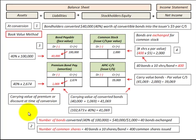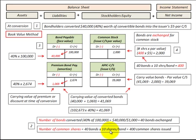The number of bonds converted would be $40,000 divided by $1,000 per bond, giving us 40 bonds exchanged. The number of common shares issued would be 40 bonds times 10 shares of common stock per bond, for a total of 400 common shares issued.